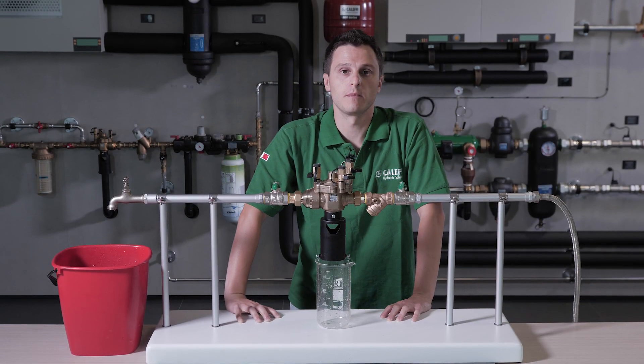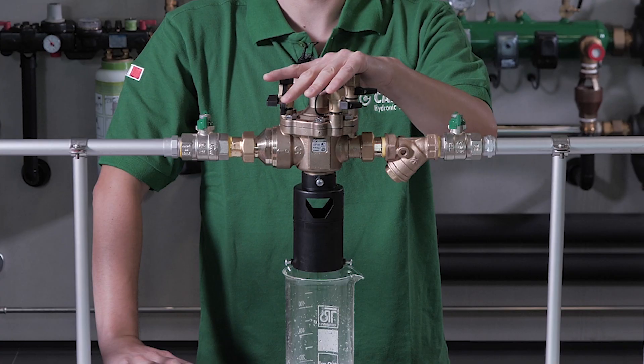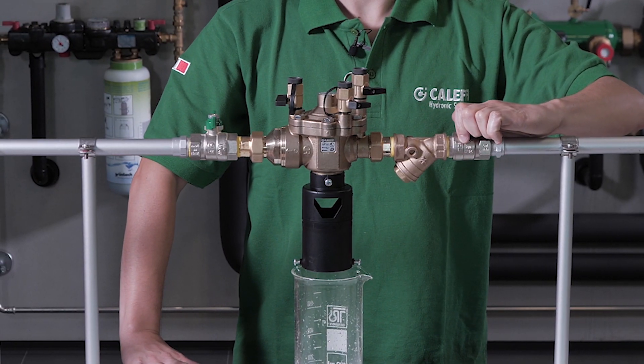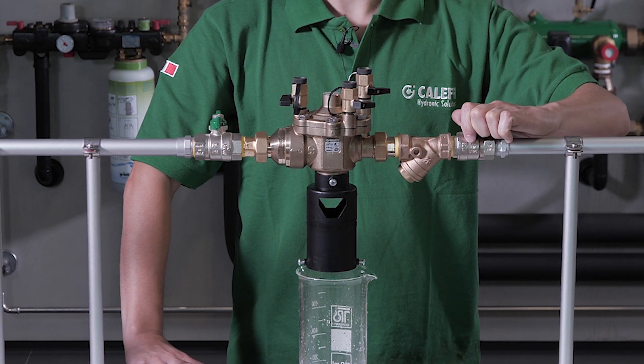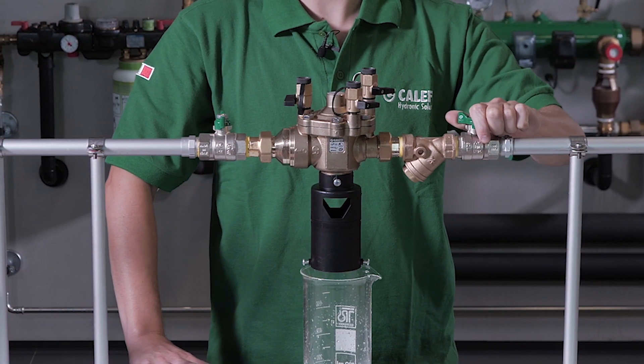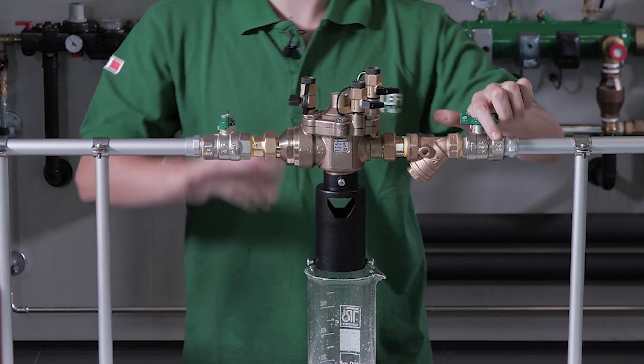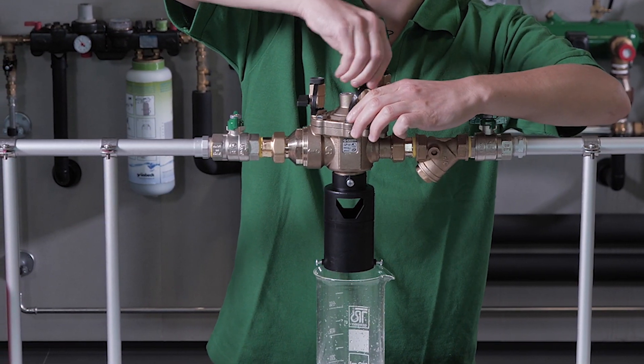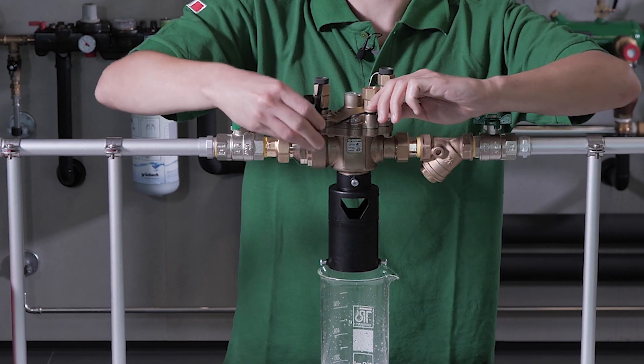After installation, the next step is filling the unit. To do this, slowly open the upstream shutoff valve and vent the air out of the unit by opening the pressure taps.